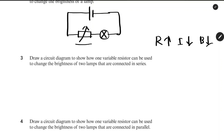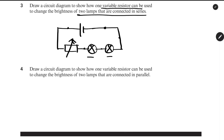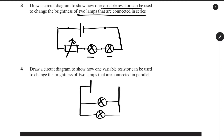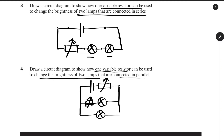Draw a circuit diagram to show how one variable resistor can be used to change the brightness of two lamps connected in series, and then two lamps connected in parallel. For the parallel configuration, we draw two lamps in parallel branches. There is a battery, and we use one variable resistor to control the total current through both branches.